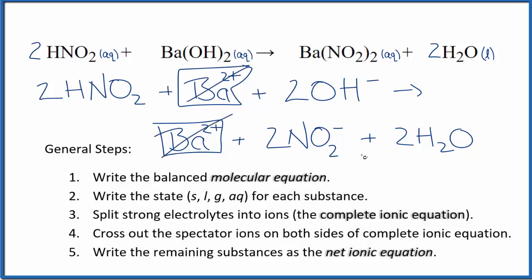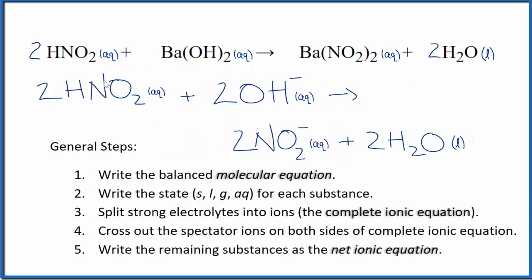Everything else is unique. This is the net ionic equation for HNO2 plus Ba(OH)2. Let me clean this up and write the states for our balanced net ionic equation for nitrous acid plus barium hydroxide.